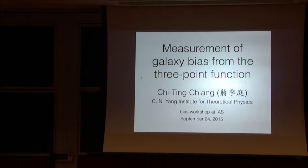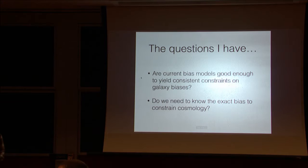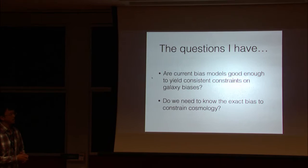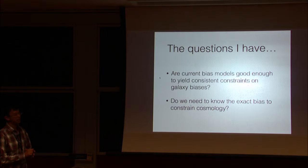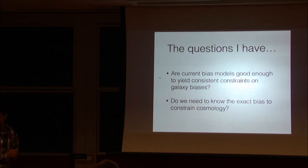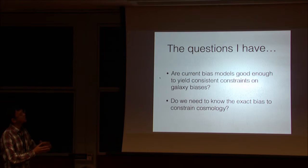So the idea of my talk is rather to initiate some discussion on two questions that I have. So the first one is our current bias model good enough to yield consistent constraint on the galaxy biases. And the second one is that we need to know the exact bias to constraint cosmology. And I think these two questions are essential for people like me who are interested in interpreting the future galaxy survey data and to understand the large-scale structure. So some of the result I will show today will be addressed to these two questions and especially for the first one. So to test the goodness of the bias model that we have currently.